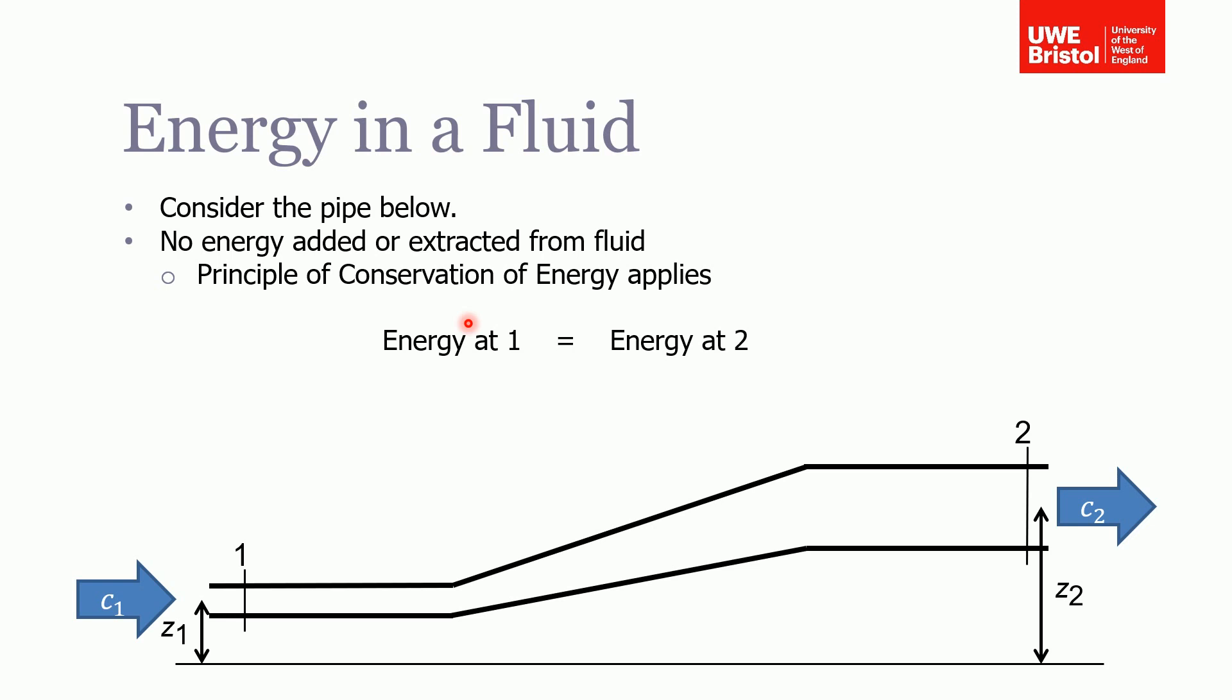Now, if we consider all the types of energy in a fluid, if we just look at this pipe below, it's coming in at 1, and we've got the inlet of our pipe, and we've got a datum 2 at the exit of our pipe. The fluid is flowing into the pipe with velocity C1, and it's exiting the pipe with velocity C2. The inlet of the pipe is height Z1 from the ground, and the exit is height Z2 from the ground. We know from conservation of energy that the energy of the inlet must be also equal to the energy of the outlet. We can't create or destroy energy.